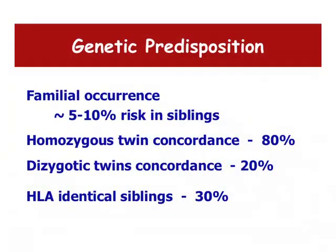If twins from the same egg — identical twins — have one develop celiac disease, there's an 80 percent chance the other twin will develop it too. For fraternal twins from two eggs, that chance is about twenty to thirty percent. This reinforces the point that if you share the same genetic code, you have a very high chance of getting celiac disease. People who are HLA-identical also have about a twenty to thirty percent chance of developing celiac disease if another person in the family has it.